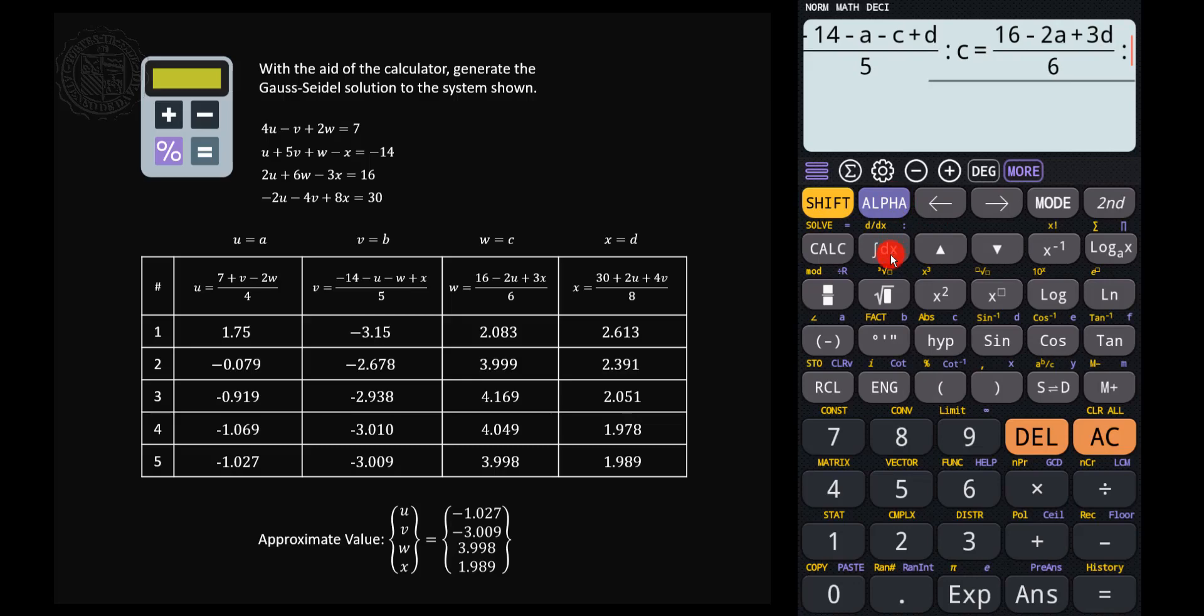Then lastly, let's input the colon function of the calculator and then type the equation for x. So x is equal to d, and then that's equal to 30 plus 2 times u but u is equal to a, then plus 4 times v but v is equal to b, all over 8.